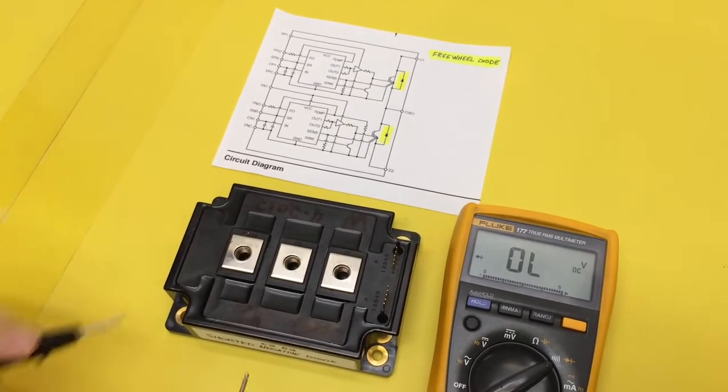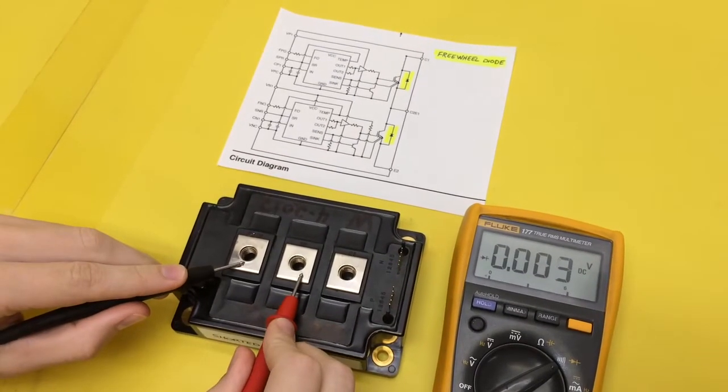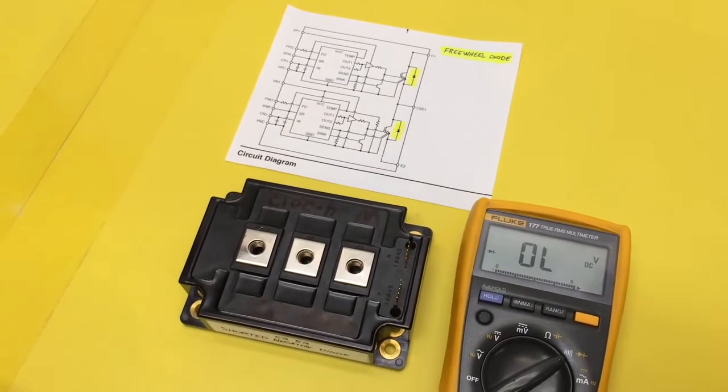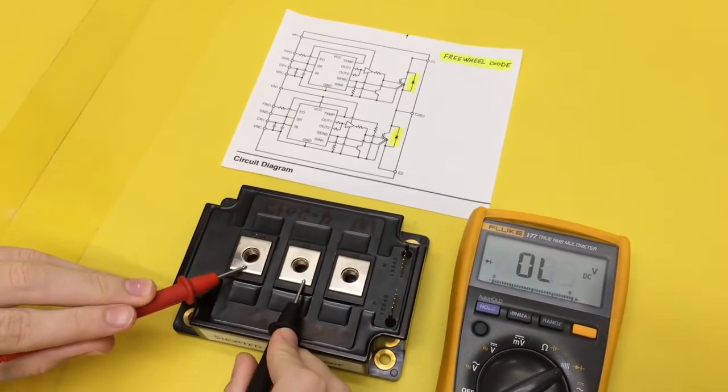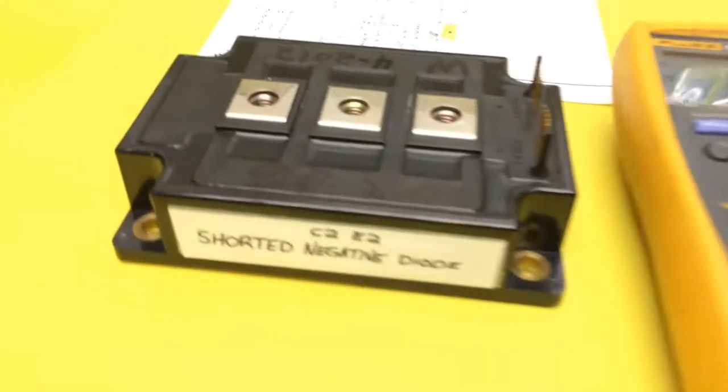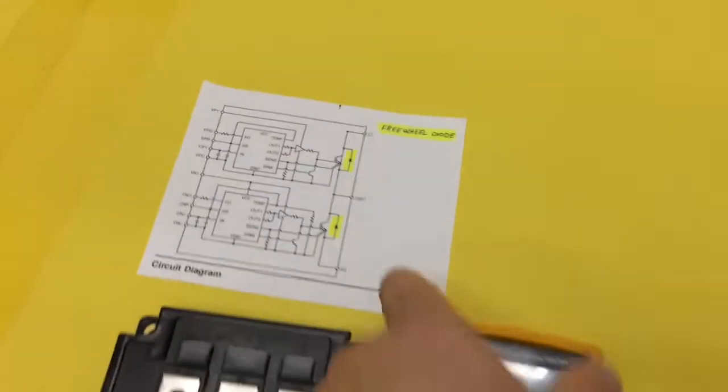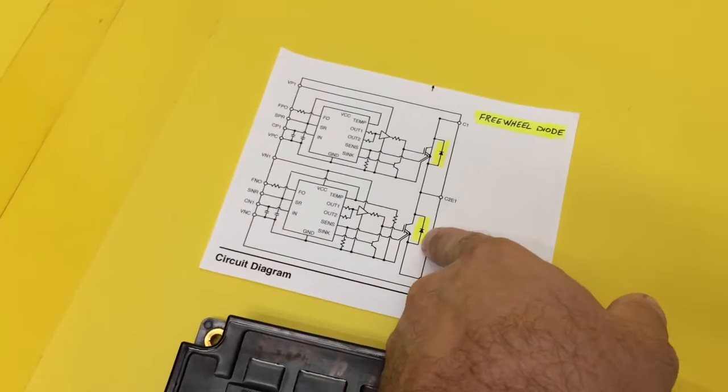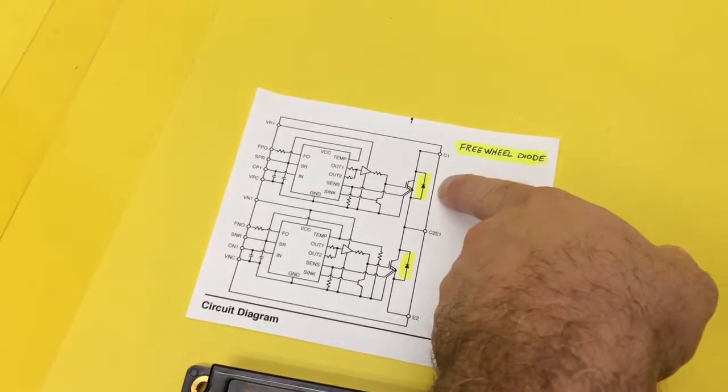So now let's go C2E2. That reads bad. Swap your meter leads. That reads bad. And this one, that's what I've got it labeled. So basically that freewheel diode is shorted. This one here is good.